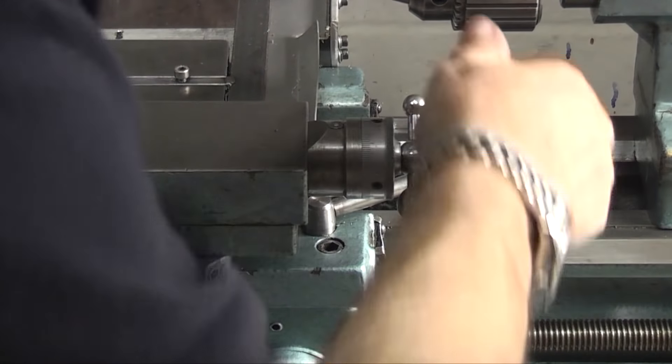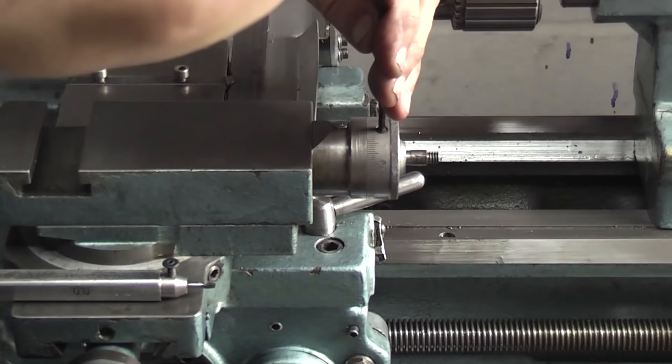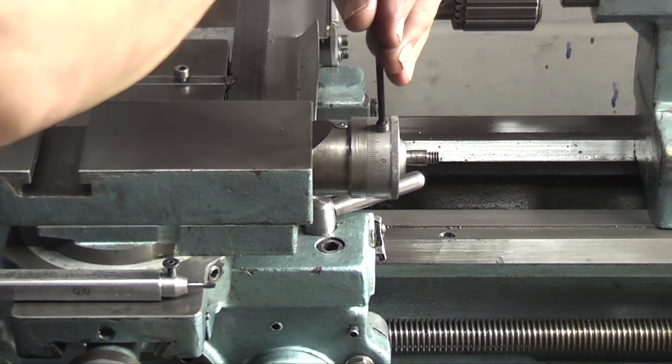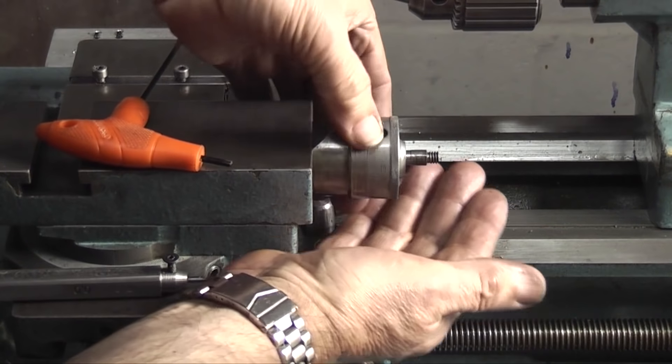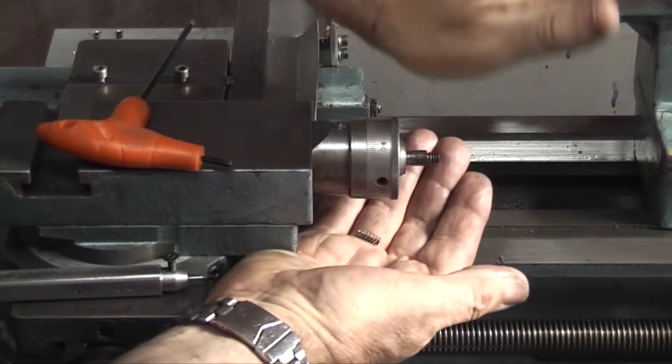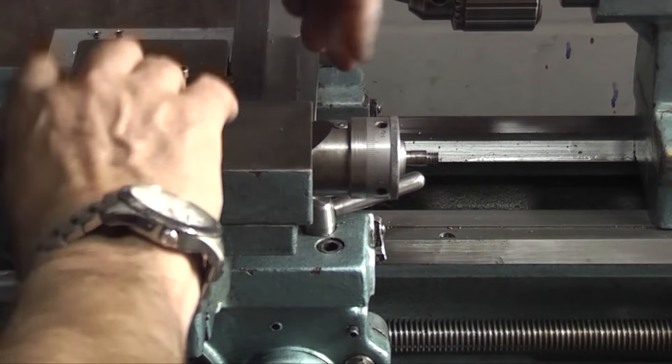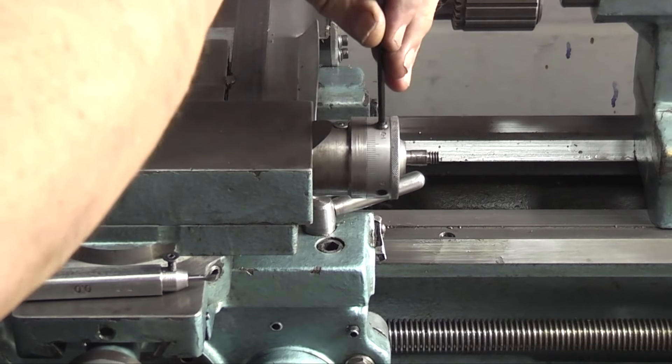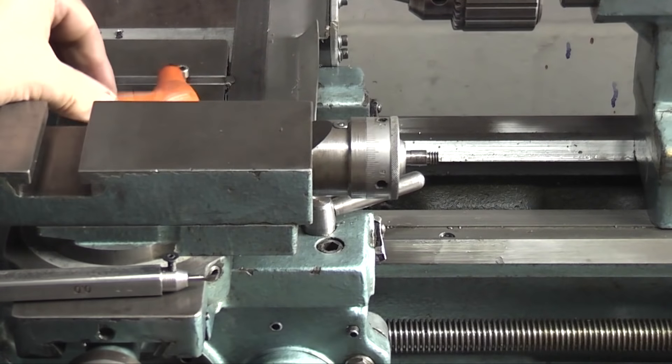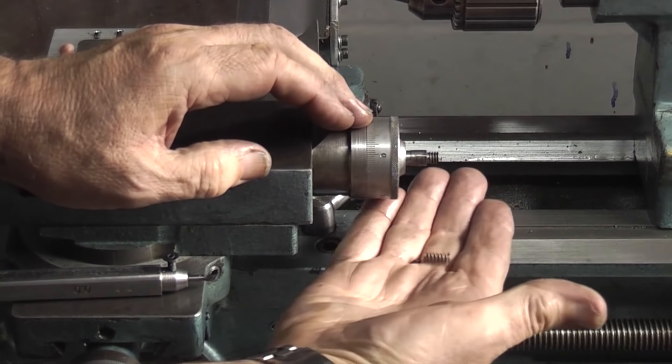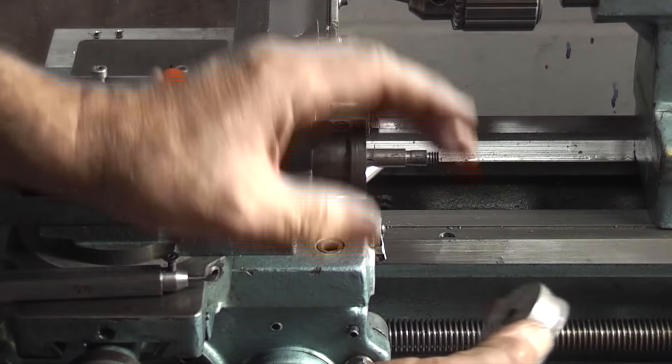Take the handle off. Then you need to undo the grub screws. Now these have a spring inside with a little brass pad. So let's tip that upside down. There's the spring and the brass pad. Same with the other one. Take the grub screw out, tip it upside down. There's the spring and pad.